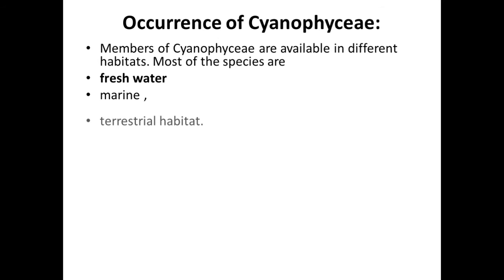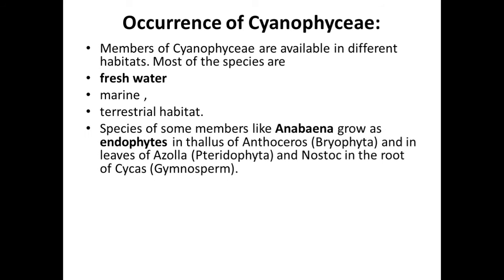The best example you know is Nostoc and Oscillatoria. Some species are epiphytic. So Anabaena grows as epiphytes in the thallus of Anthoceros, a bryophyte. Some forms grow in leaves of pteridophytic plants.